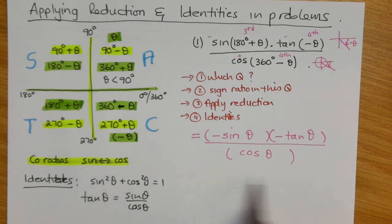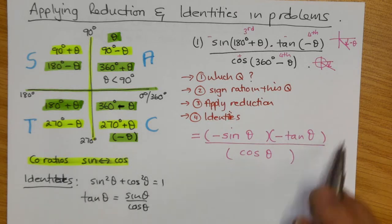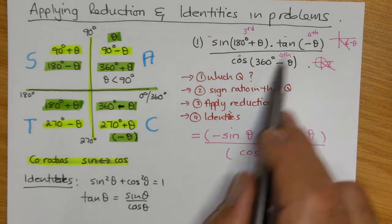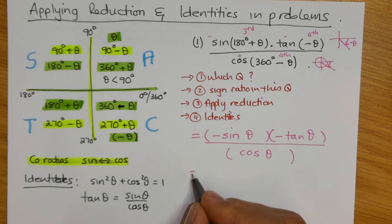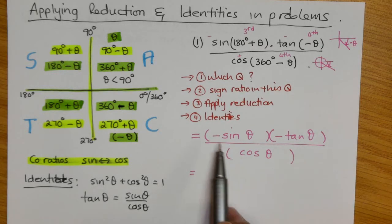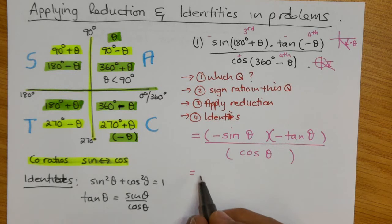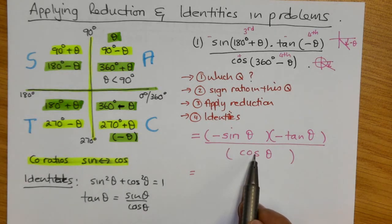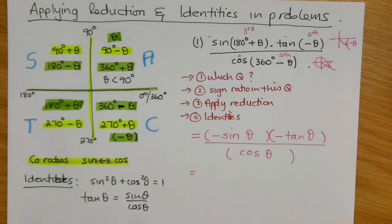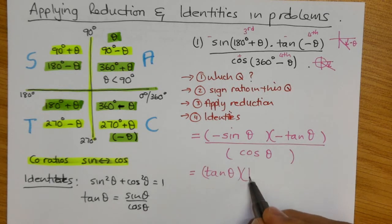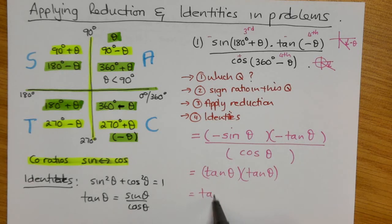Now we do the algebra. A minus times a minus is a positive, so the negatives dissolve. We have sine over cosine, which by the quotient identity gives tan of theta. Multiplied by another tan theta, the result is tan squared theta.